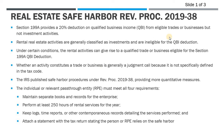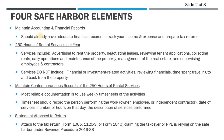The Rev Proc has four main elements. The individual or the RPE — the relevant pass-through entity — so if we're doing this analysis for a partnership or an S corporation, you have to meet all four of these elements, which are laid out in the revenue procedure. In order to meet the safe harbor, you need all four. The first one is maintain separate accounting and financial records.